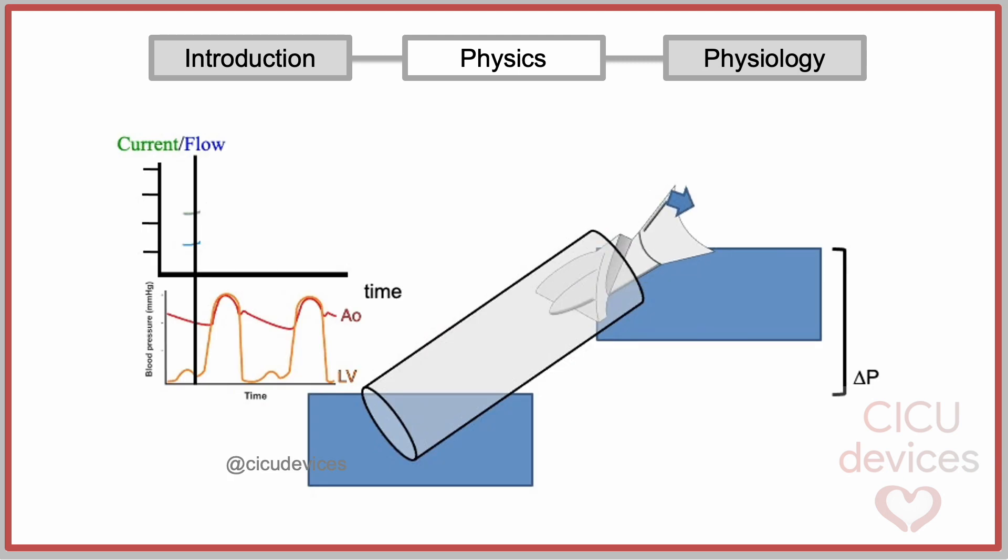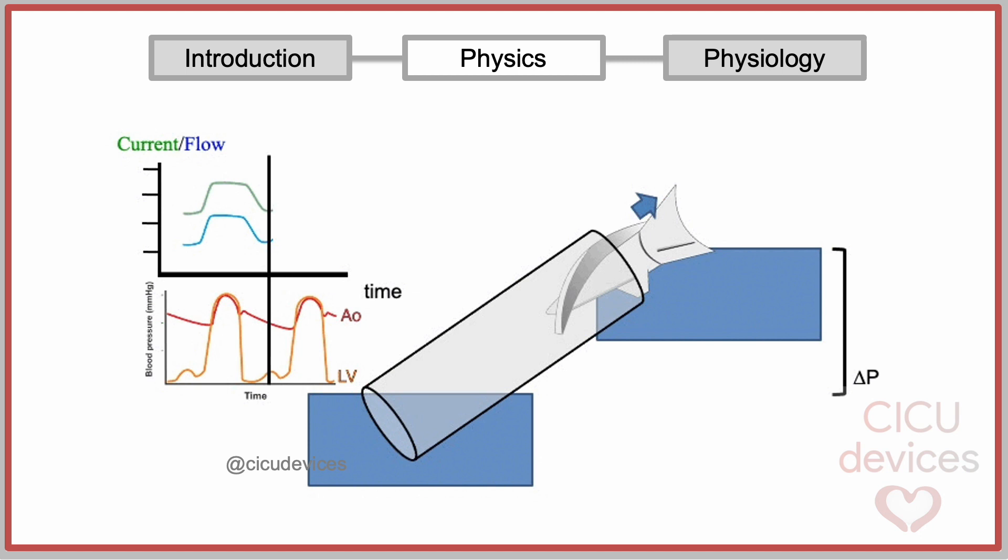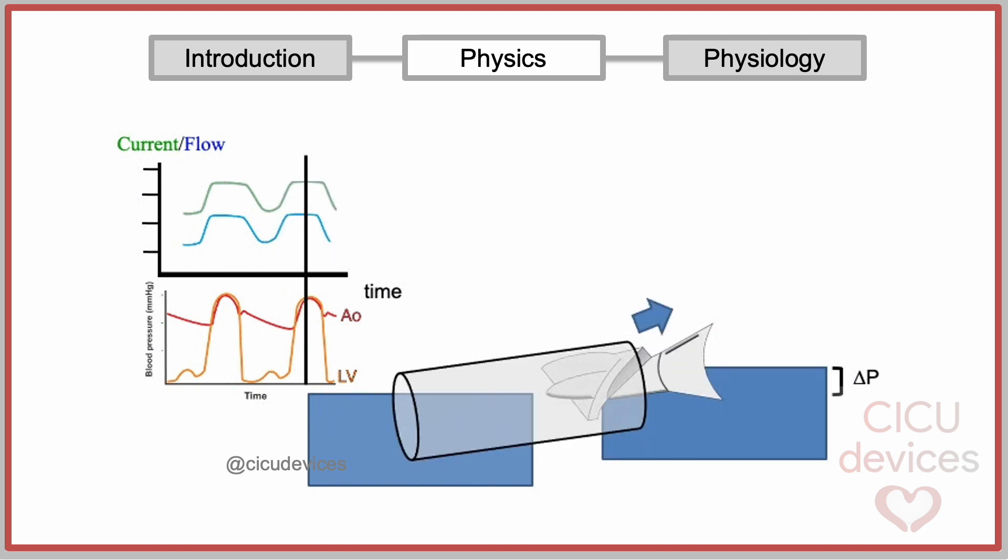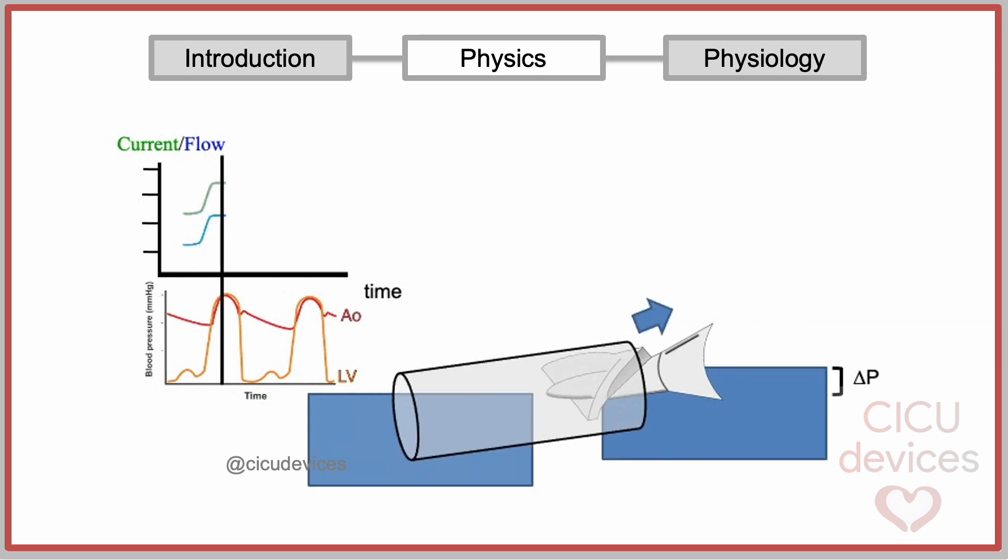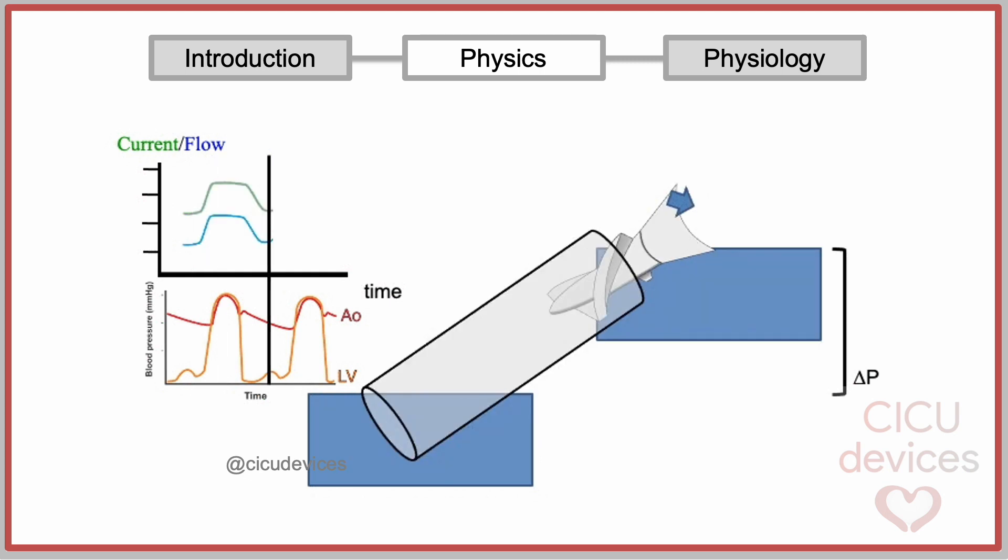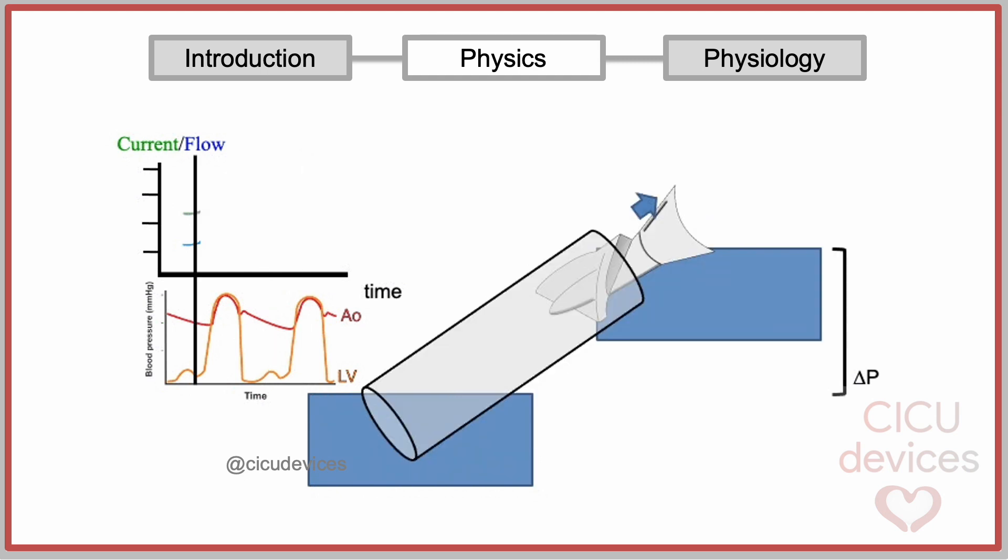As explained in our previous video, the current required to maintain the rotation speed depends mainly on the pressure difference between the two cavities. Pressure difference is highest during diastole and minimal during systole. So the current varies throughout the cardiac cycle based on this pressure gradient, with a small lag or hysteresis.